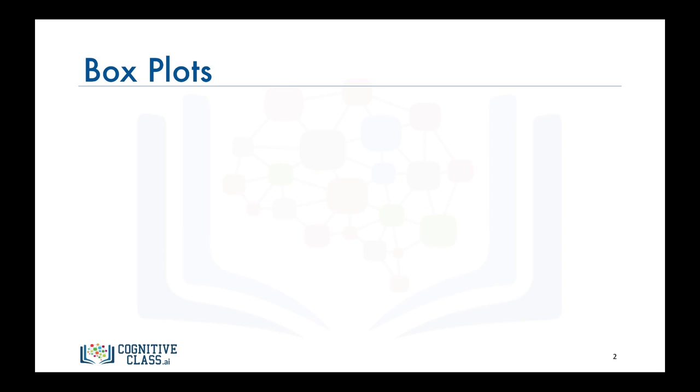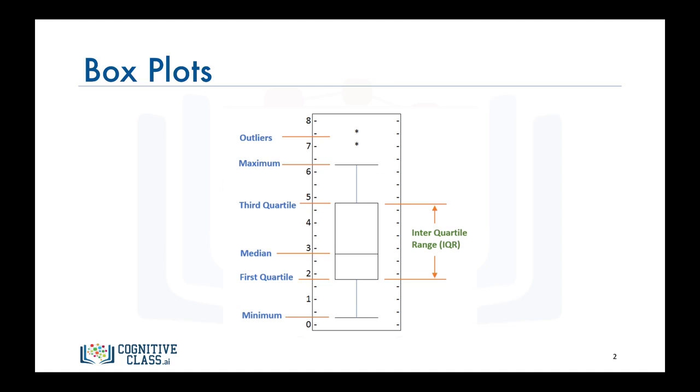So what is a box plot? A box plot is a way of statistically representing the distribution of given data through five main dimensions.